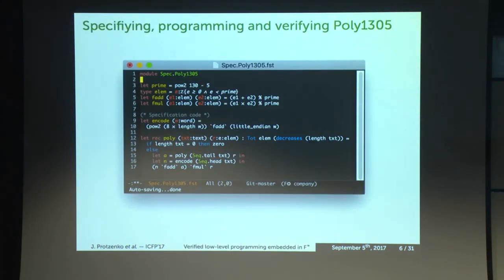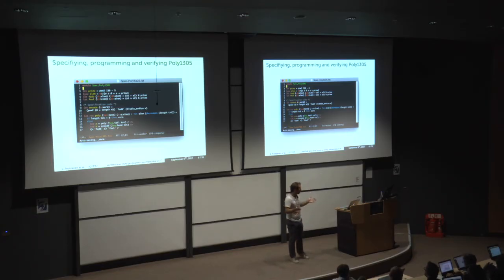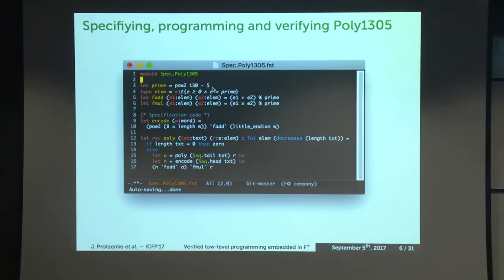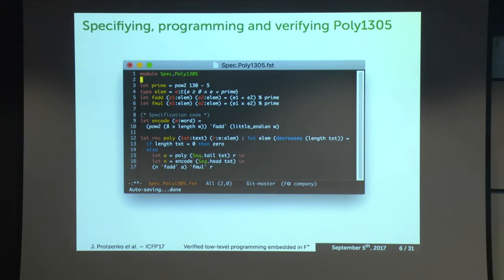This screenshot is not only intended to demo our Emacs mode for F*, but also to show that it's actually very simple to specify what this polynomial is in just 17 lines. You take the prime to be 2^130 minus 5, elements in the field are positive and smaller than the prime, field addition and multiplication are done modulo the prime, and the recursive polynomial evaluation is defined in six lines as an addition followed by a multiplication. This is specification — no one will ever want to use this as the actual code to perform the operation.